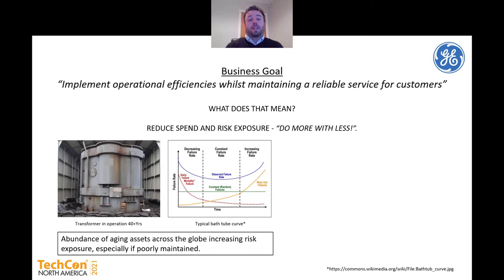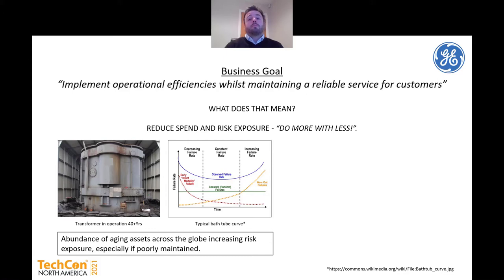You can see in the two images on the slide — the one on the left is a transformer that's been in operation for 40-plus years. This transformer is operating and doing what it's supposed to, but at this point it is well beyond its designed life. That is a common theme in many utilities where assets are still operating today and playing a crucial role in the grid well beyond their design life. You can also see a typical bathtub curve for assets, which shows an increased risk of failure at the very early stages of the asset's life, then stabilizes, and then starts to increase again as the asset gets older and components start to wear.